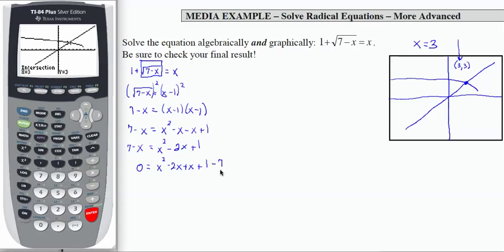So I added x to both sides, subtracted 7 from both sides. That leaves me with x squared minus x minus 6. And this equals 0.